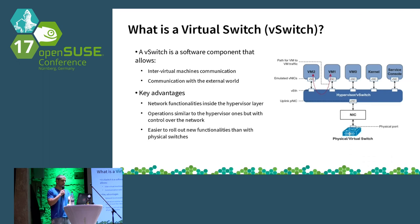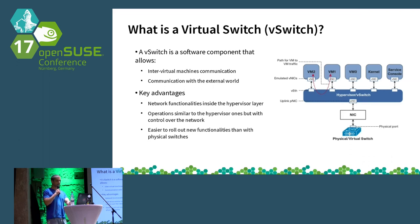It's much easier now to roll out a network functionality — you can add a new feature in a vSwitch and try it out in your lab and then your production environment. And you can even be on a machine not connected to any other machine and still do all your work with VMs.